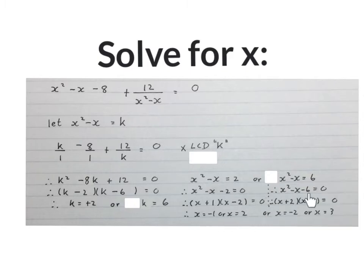Factorize this quadratic equation, and get two answers from here. So this equation has four possible answers for x, and we have them here. x is equal to minus 1, x equal to 2, x equal to minus 2, or x equal to 3.